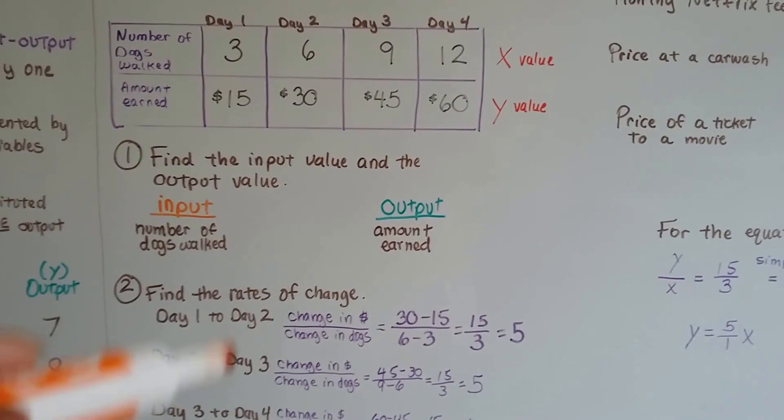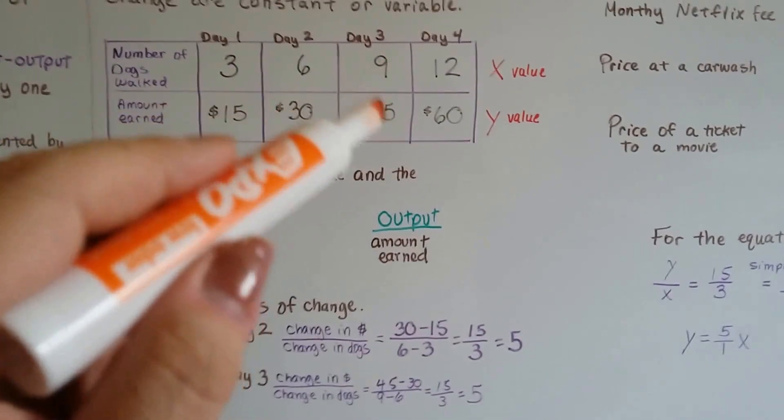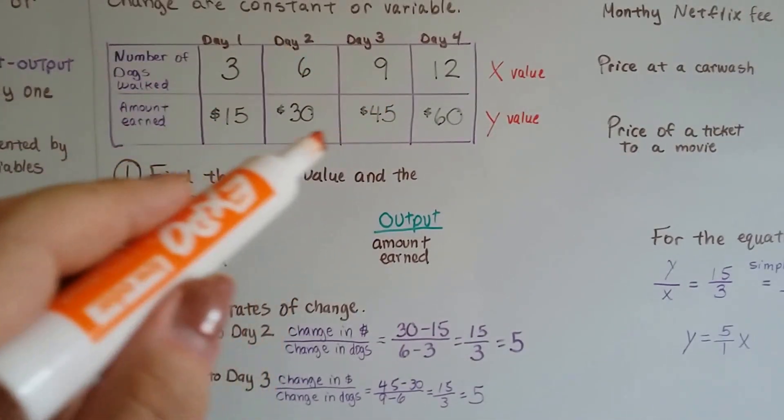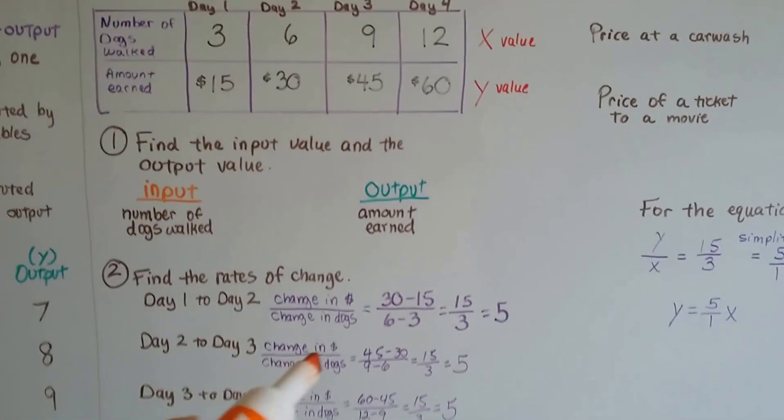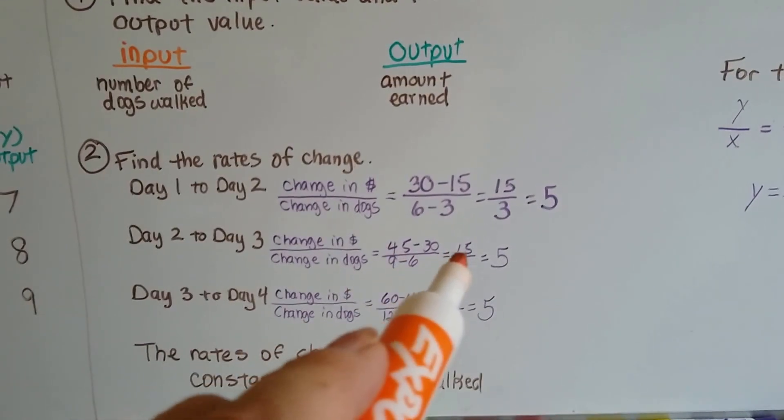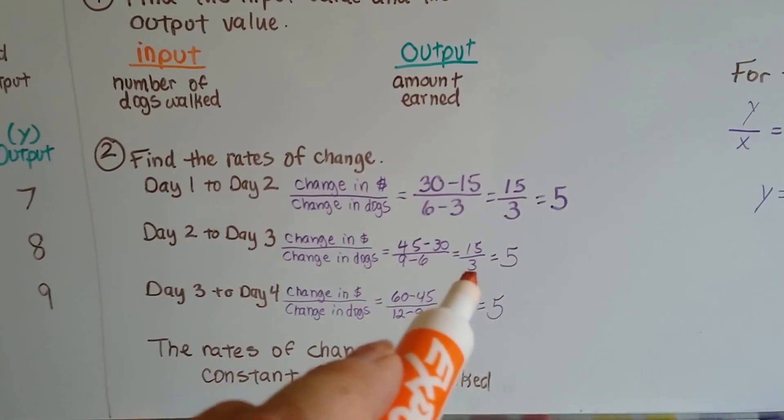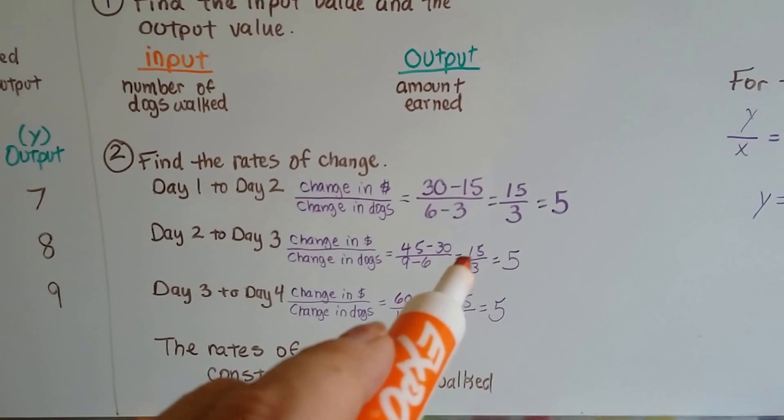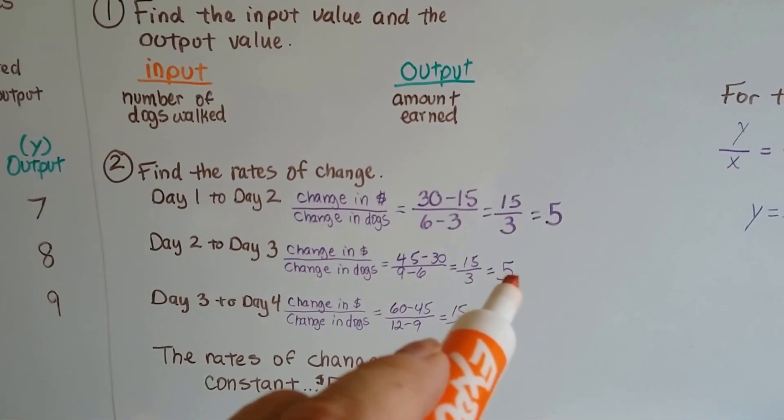Now, day 2 to day 3, from this day to this day, we've got 45 minus 30 over 9 minus 6. Well, 45 minus 30 is 15, and 9 minus 6 is 3. It's the same as the previous one. The rate of change is 5.